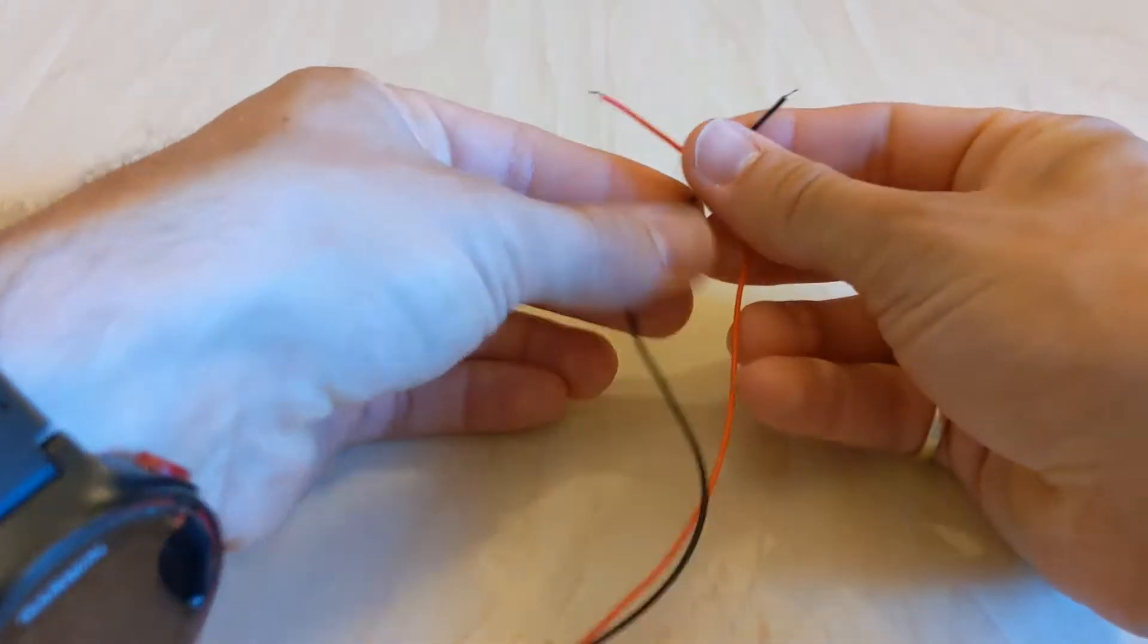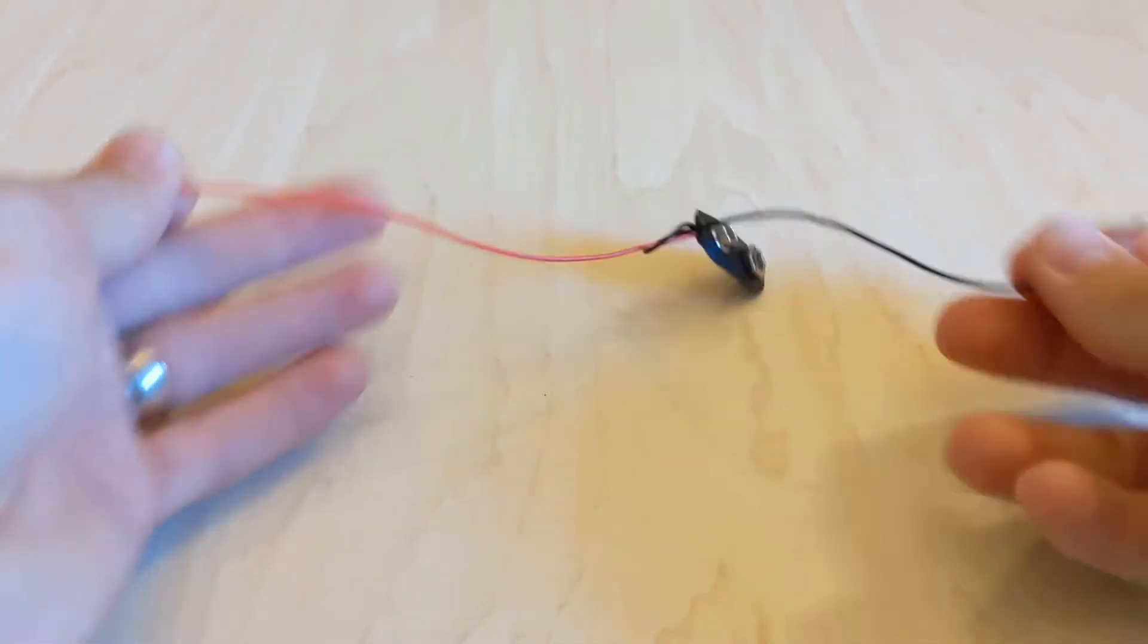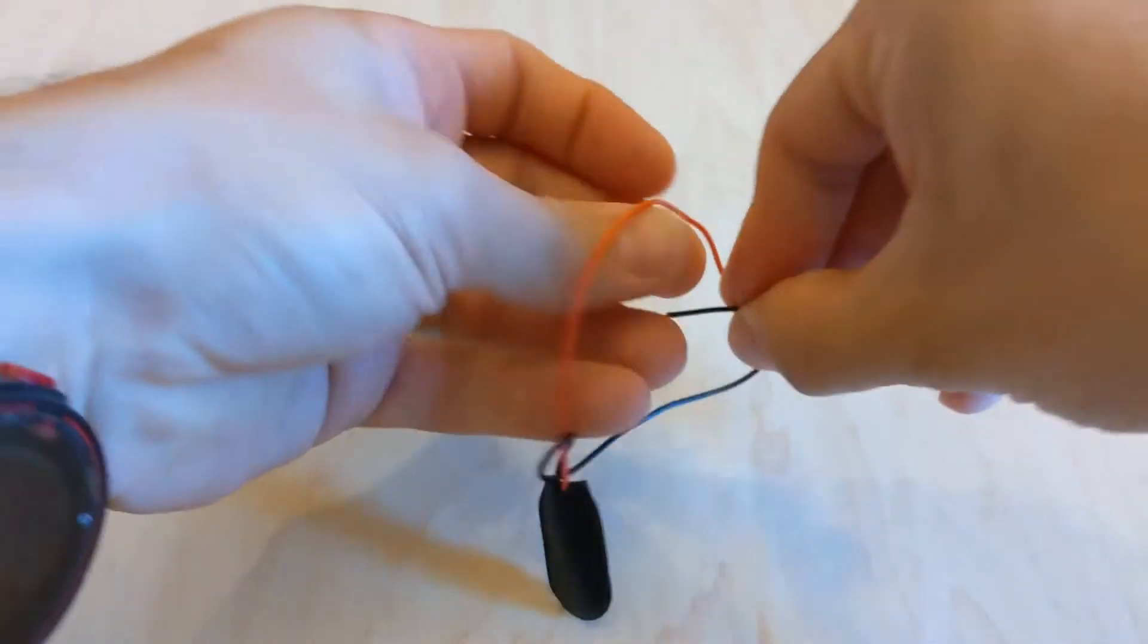First up you're going to want to tie a reef knot in your battery snap cable. This will help prevent short circuiting.